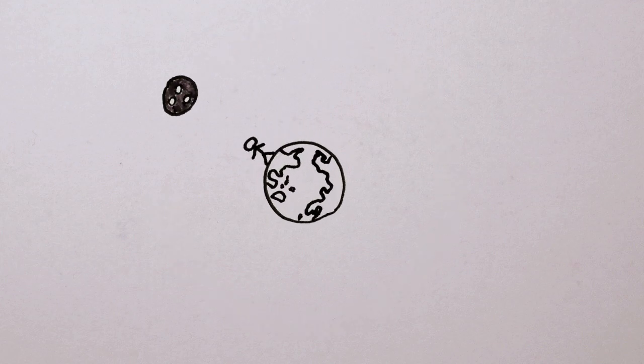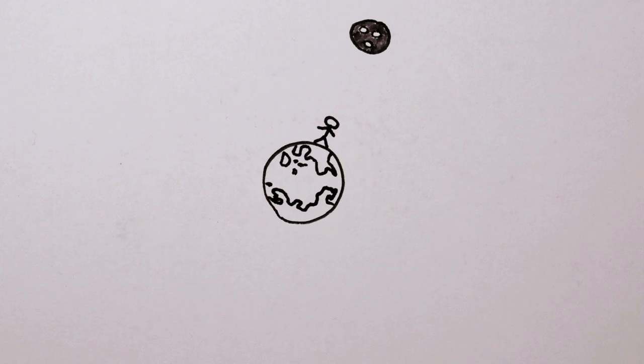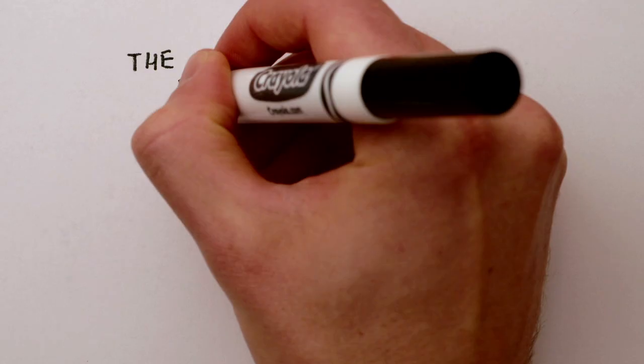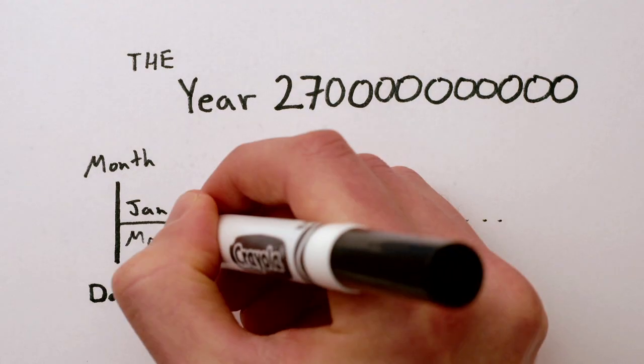Eventually, the Earth will spin slowly enough that the same side of the Earth will always face the Moon, just as the same side of the Moon already always faces the Earth. This means that in the distant future, a day and a lunar month will each have the same length, about 50 of our current days.